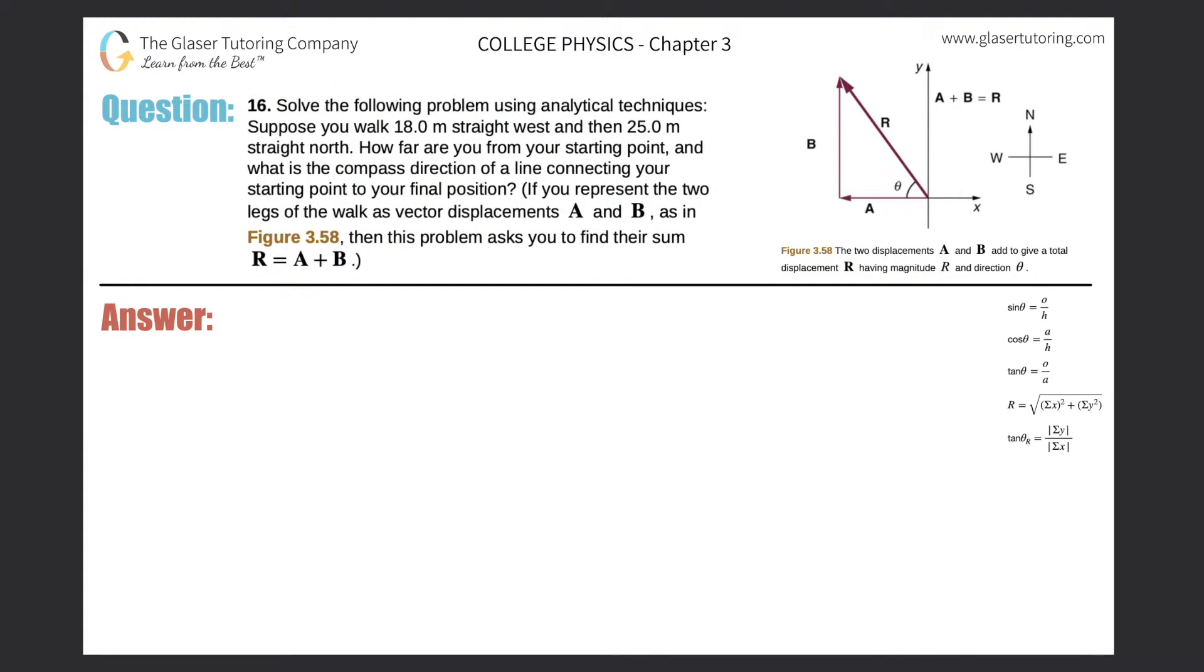Number 16. Solve the following problem using analytical techniques. Suppose you walk 18 meters straight west and then 25 meters straight north. How far are you from your starting point and what is the compass direction of a line connecting your starting point to your final position?